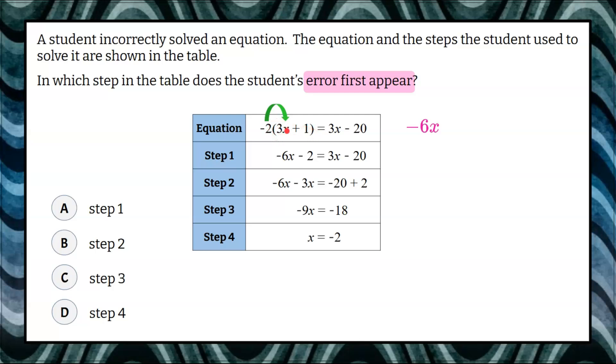Negative 2 multiplied by 3x is negative 6x. Then we need to do negative 2 multiplied by the positive 1, which is negative 2. And then the right side of the equation, we're going to leave it as it is, 3x subtract 20. So when I look at step 1, when they distributed, they have negative 6x subtract 2, just like we do, and the 3x subtract 20 to the right of the equal sign. So step 1 is not where the student made the error.